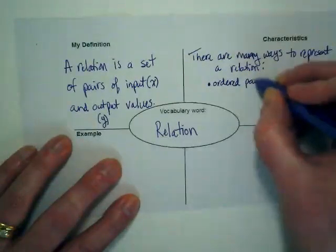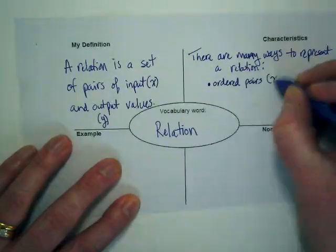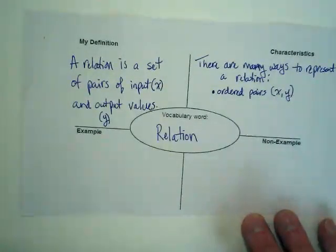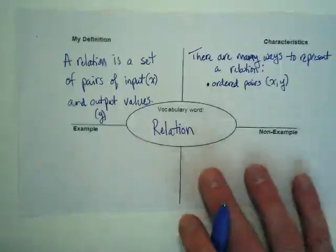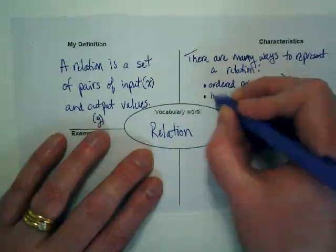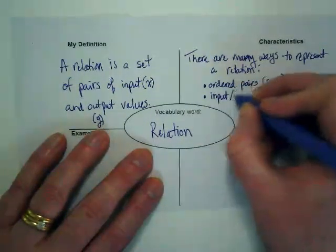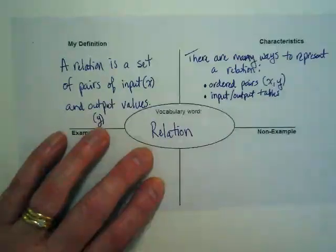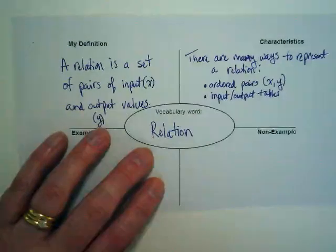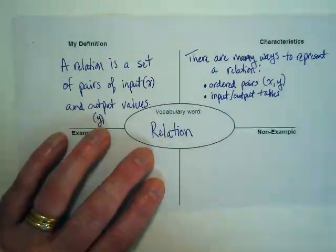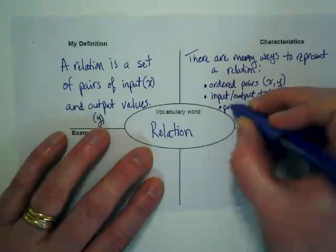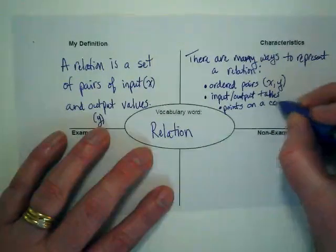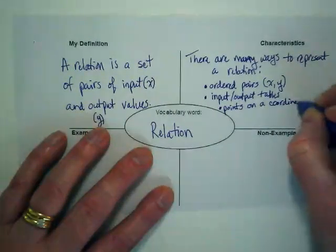Ordered pairs. One of my favorite ways is input-output tables. The third way is points on a coordinate graph, the coordinate plane.